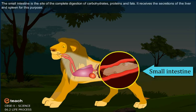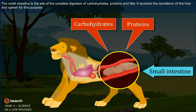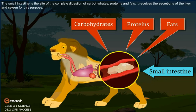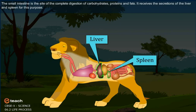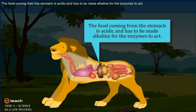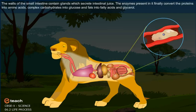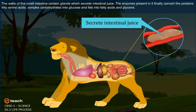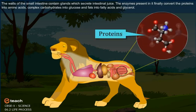The small intestine is the site of the complete digestion of carbohydrates, proteins and fats. It receives the secretions of the liver and pancreas for this purpose. The food coming from the stomach is acidic and has to be made alkaline for the enzymes to act. The walls of the small intestine contain glands which secrete intestinal juice.